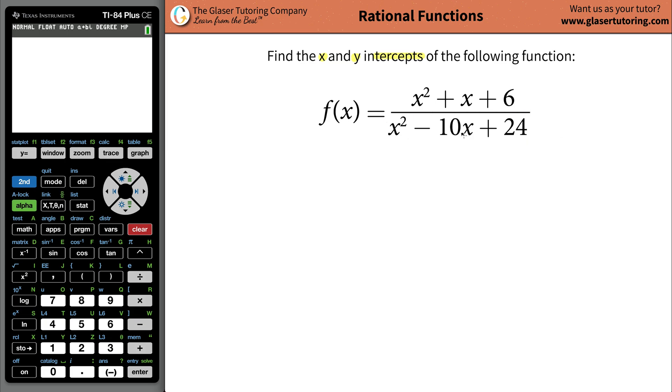In order to do this, whenever I have a complex rational function trying to find the x and y intercepts, I always want to have this in fully factored form because I want to check if any factors will cancel, because if factors cancel that can affect my x and y intercepts.